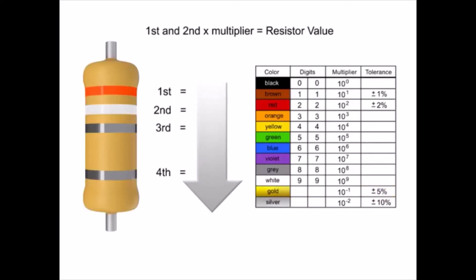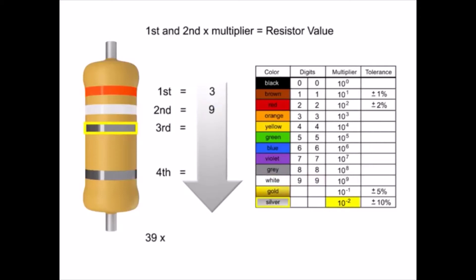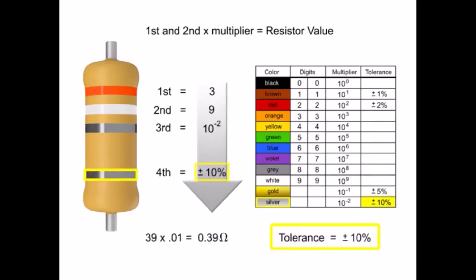In this example, the first band is orange, so the first digit is 3. The second band is white, so digit 2 is 9. The third band is silver, so we multiply the first two numbers by 10 to the negative second power, or 0.01. In this instance, we would take the 39 and move the decimal point two places to the left, resulting in a value of 0.39 ohms.